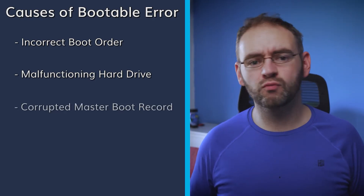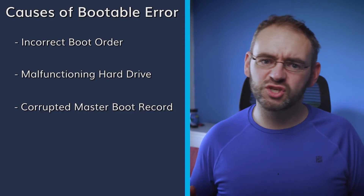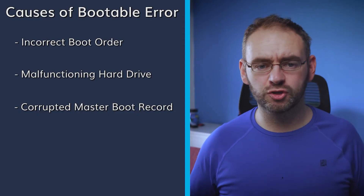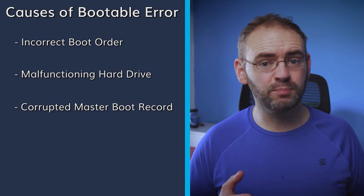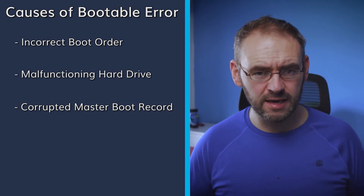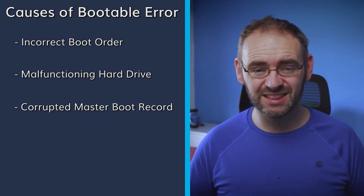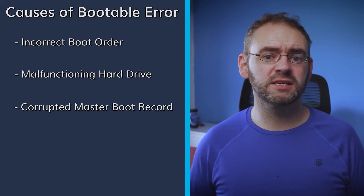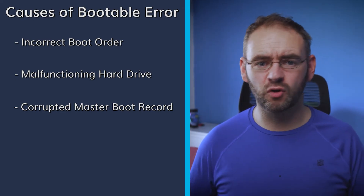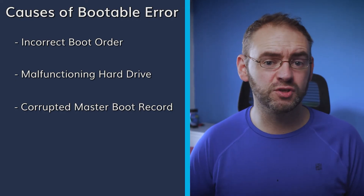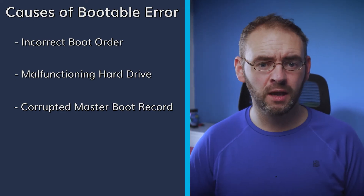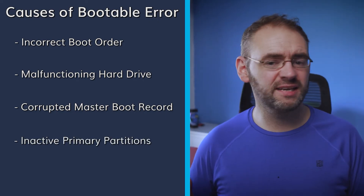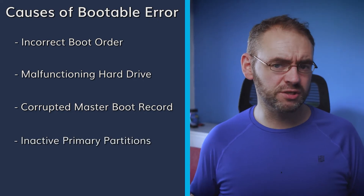Think of the master boot record as the conductor's baton — it signals where each section of the orchestra should begin playing. A corrupted MBR can lead to chaos, preventing your system from finding its rhythm and causing the error to appear.